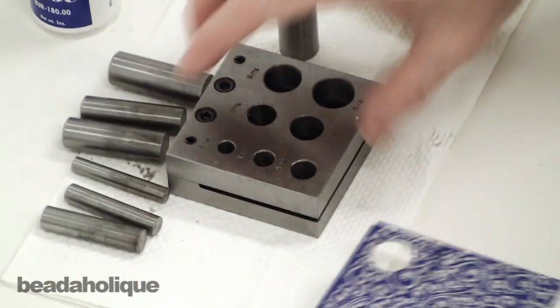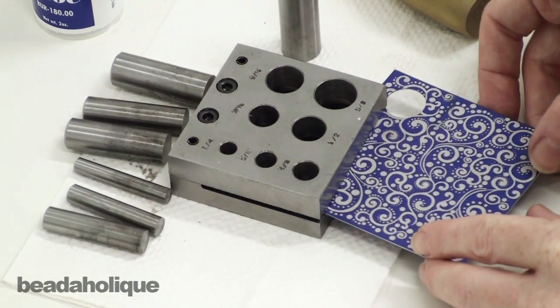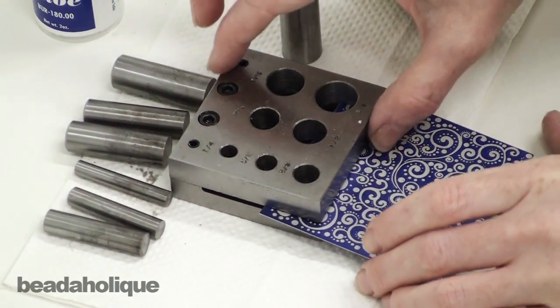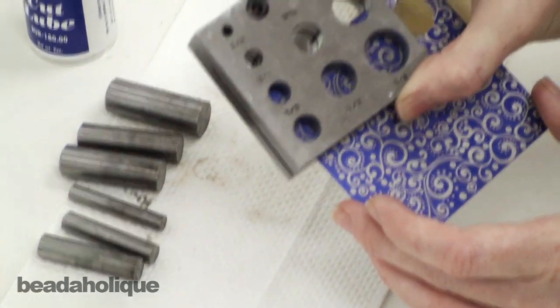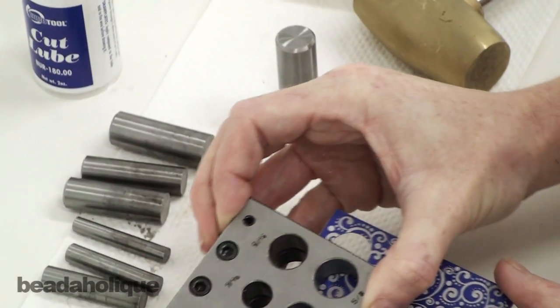Then what I'm going to do is you're going to slide your sheet metal right into this little slot right here and if you're doing something with a pattern you can actually look through the hole to see where the pattern is.